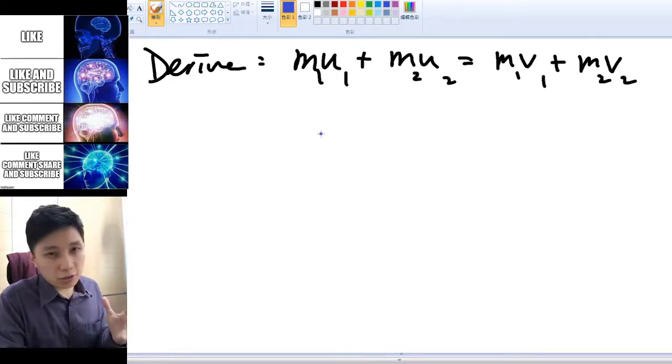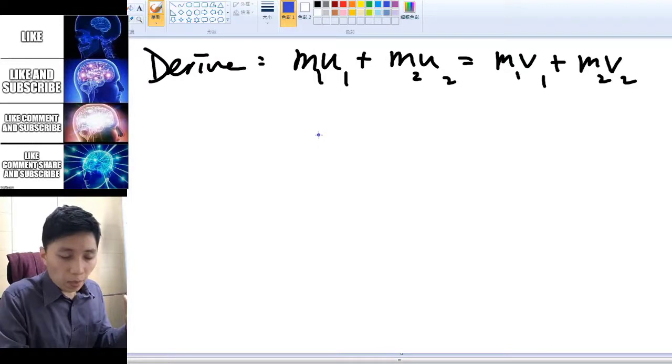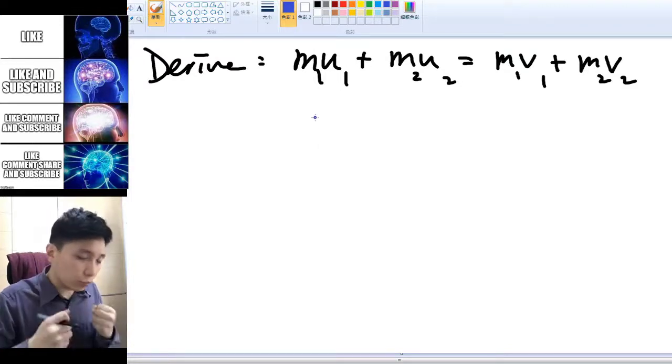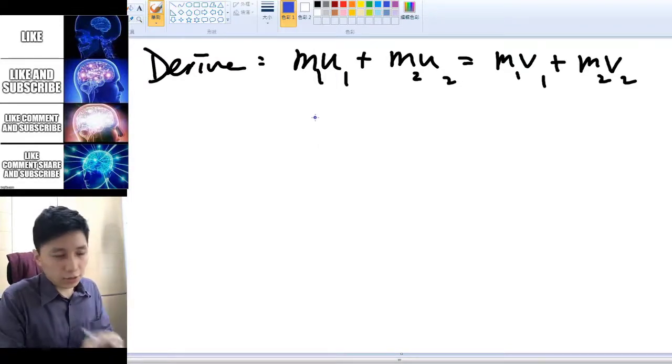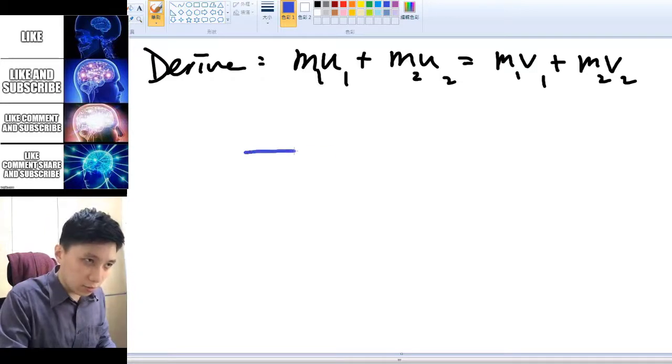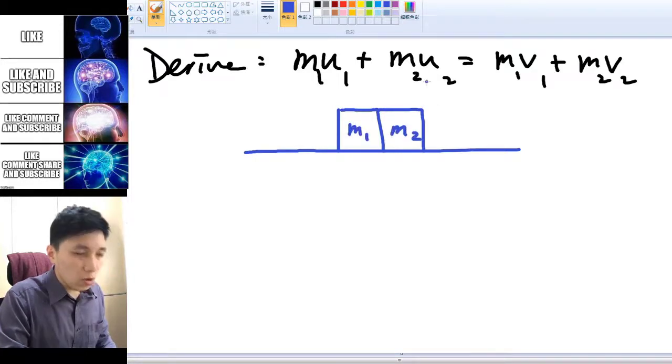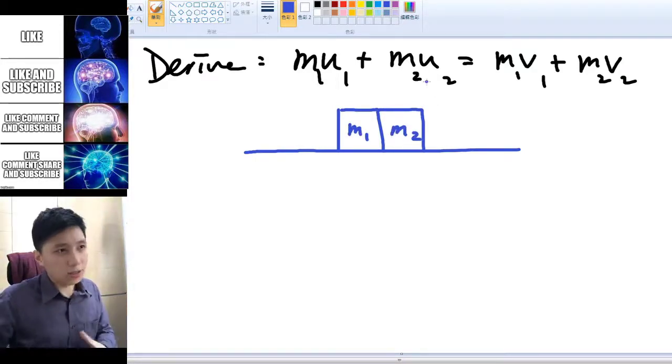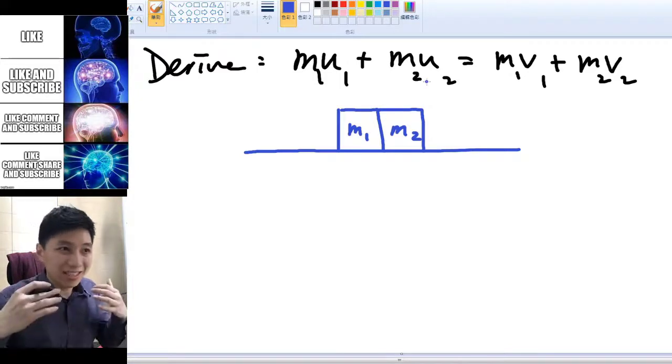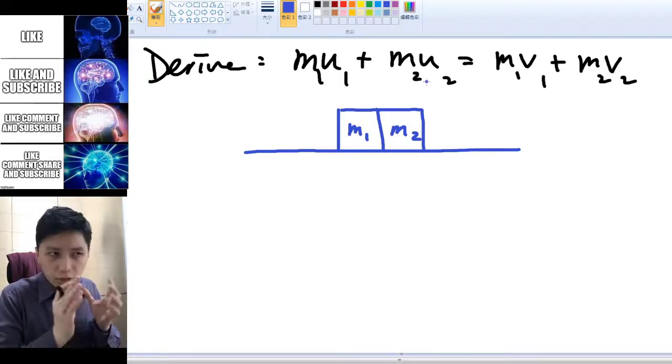When we try to use this equation, it all involves the fact that when there are two objects, they collide with each other. So think about when two blocks, let's say this one and there's another one, m₁ and m₂, when they collide there must be an impact force between them.